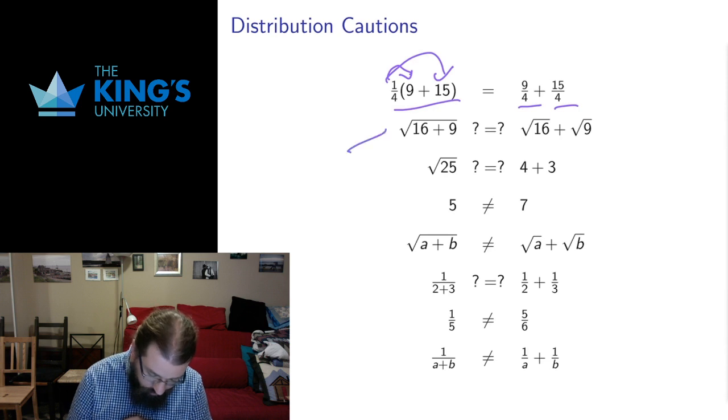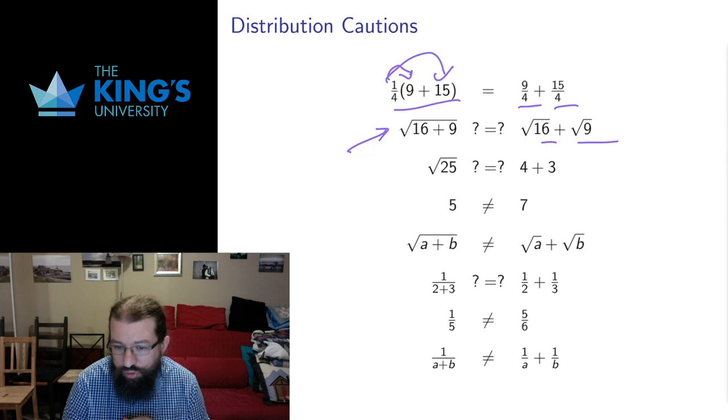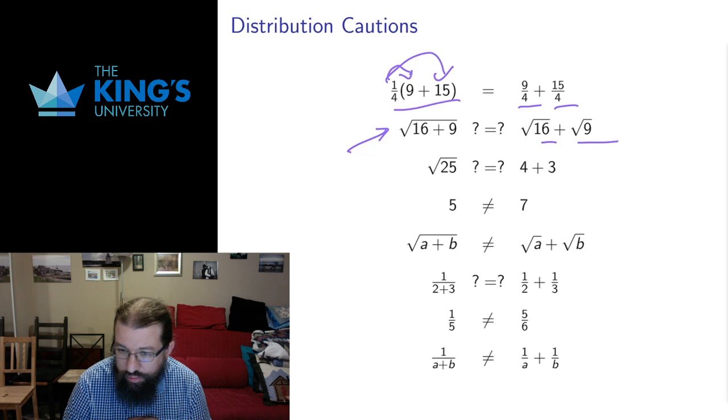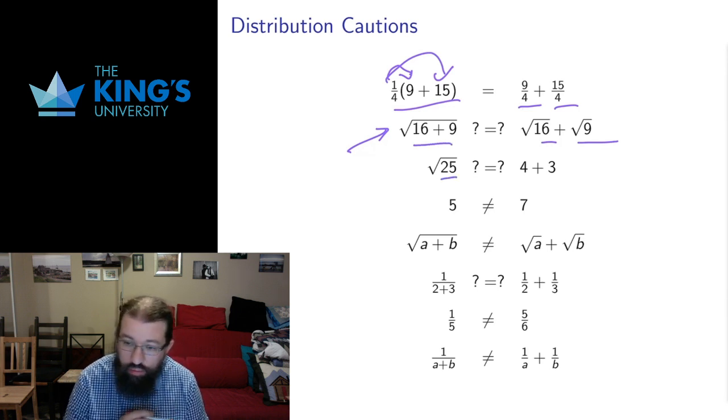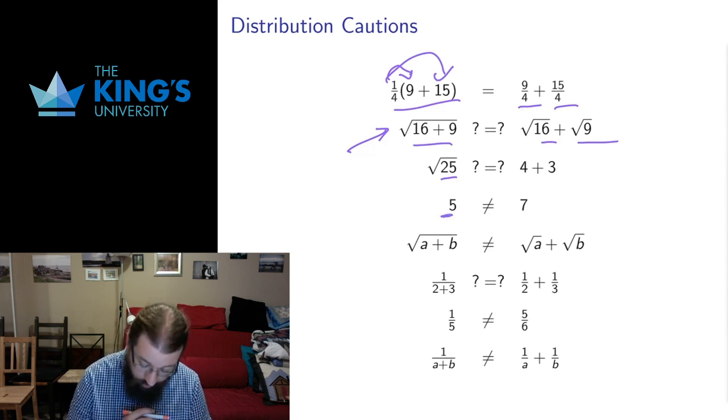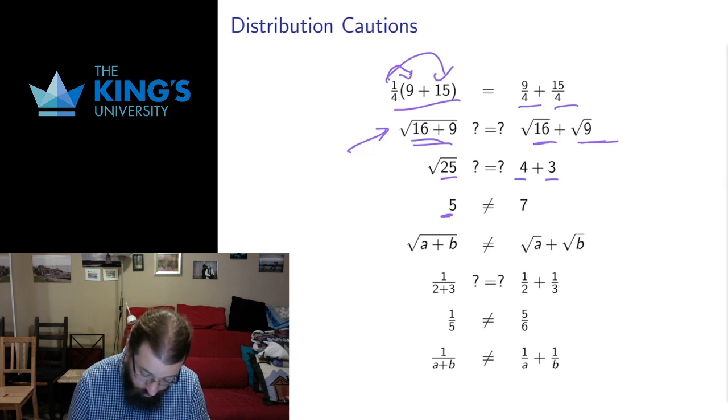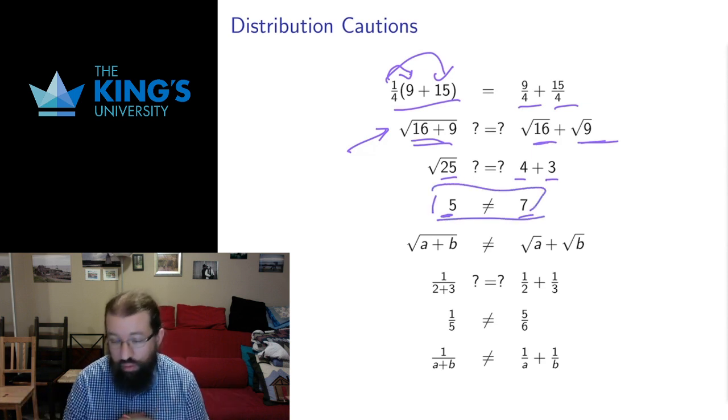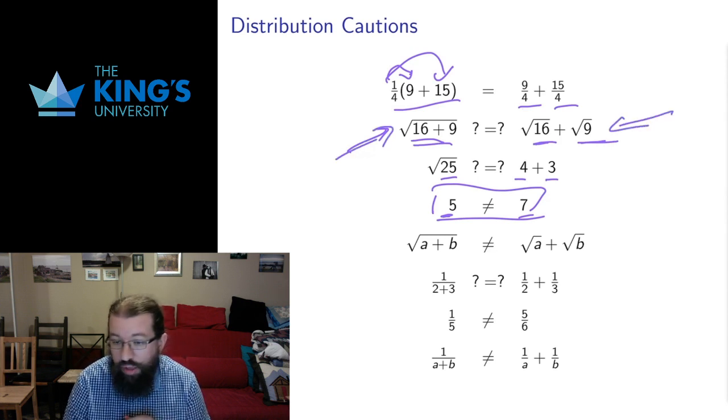People are tempted to distribute in all sorts of other places, and it almost never works. So let me talk a little bit about other places that look like distribution. So in this circumstance, I have a square root, and it looks like we might be able to distribute the square root, split the square root up over the addition. Let's look and see if that works. So if I do the addition first, 16 plus 9 is 25, then I do the square root. Square root of 25 is 5. If I split this up into two square roots, square root of 16 is 4, square root of 9 is 3, 4 plus 3 is 7. 5 is not equal to 7. So this step here must not have been a valid step.